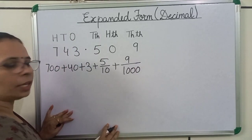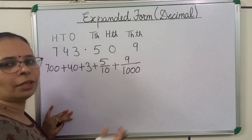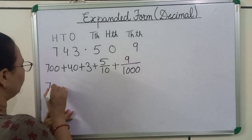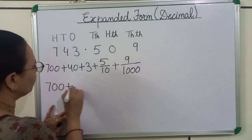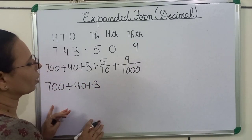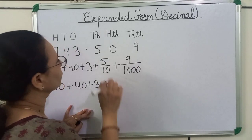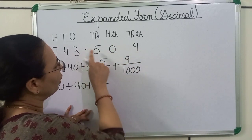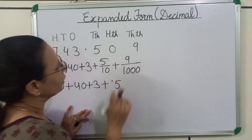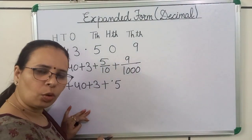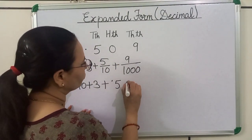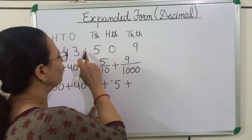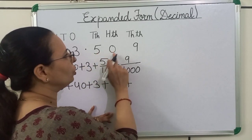Now we will expand this number using the decimal method. We will expand the whole number. Now we will expand the decimal part. First we will write 0.5. Next digit is 0, so we will skip it. Next number is 9, so we will write 0.009.